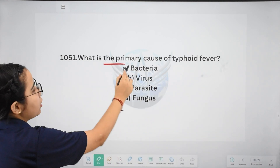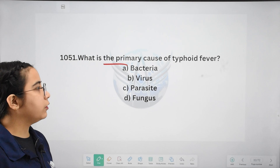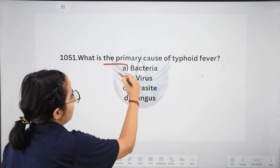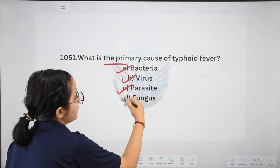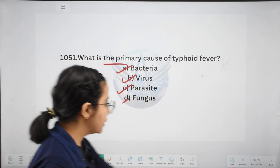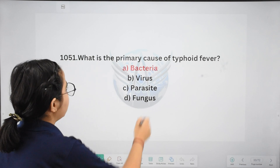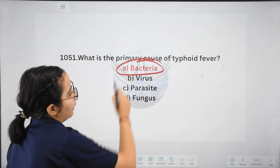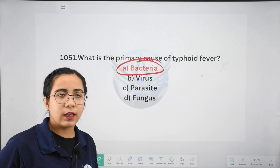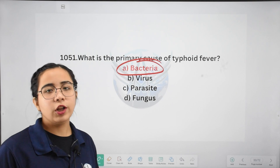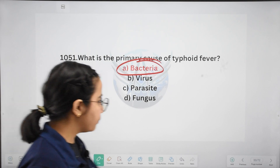Next: what is the primary cause of typhoid fever? Options: bacteria, virus, parasite, or fungus. The right answer is bacteria. Bacterial infection causes typhoid.